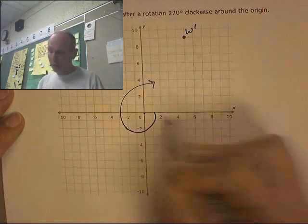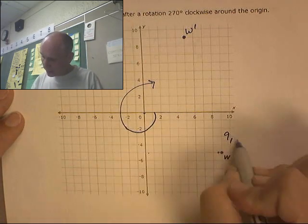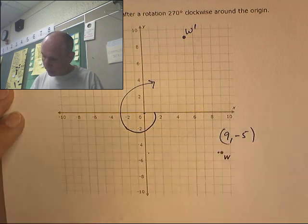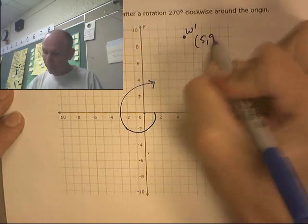And now let's look at the connection. This was at 9, negative 5. And this one is at 5, 9.